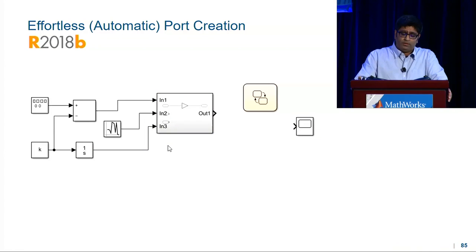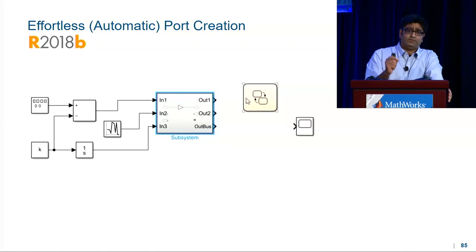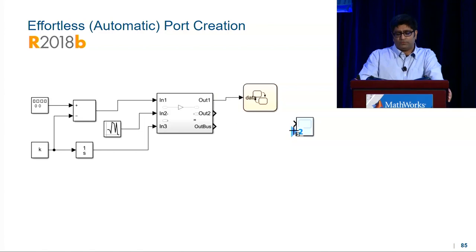In 18B, we did one better. We added support for automatic port creation without lines. You can now define your I/O or your system I/O before you connect. I can select from a signal port, a Simscape port, or even a bus port. I can do this for the chart block, and I can even do it for the scopes. Once I'm done creating all the ports, I can just wire up my diagram, and I'm done.